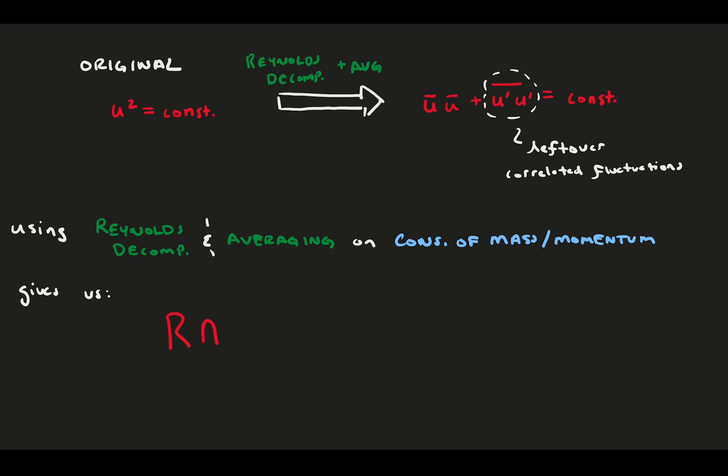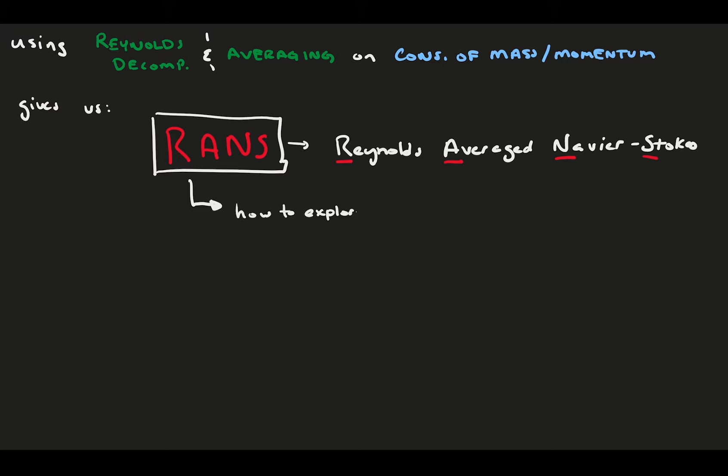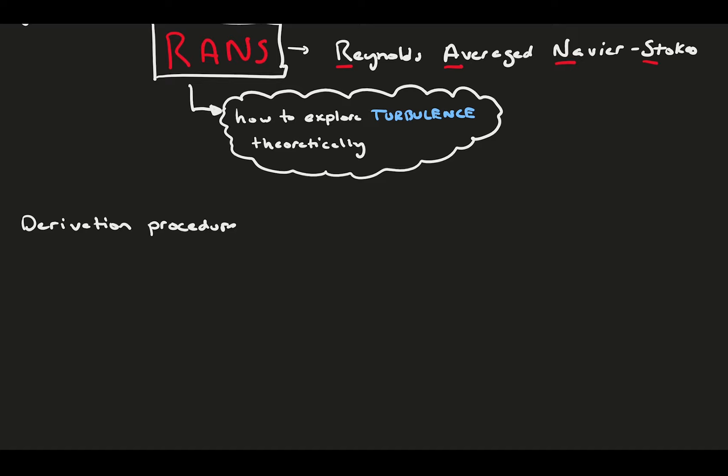When you apply Reynolds decomposition in averaging to the set of conservation of mass and conservation of momentum equations for a fluid, you get what's famously referred to as RANS. RANS stands for Reynolds averaged Navier-Stokes. Amazingly, this new set of equations somehow has three people's names in it. The most important attribute of the RANS equation is that it allows us to explore the chaotic world of turbulence theoretically, because we can apply assumption to the average equations. Let's see how it works.